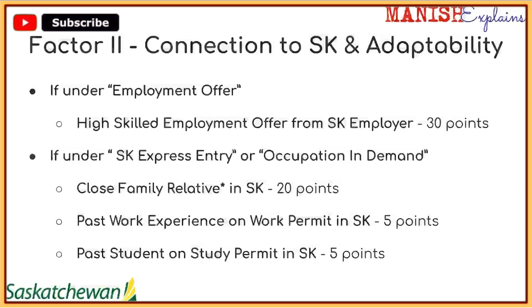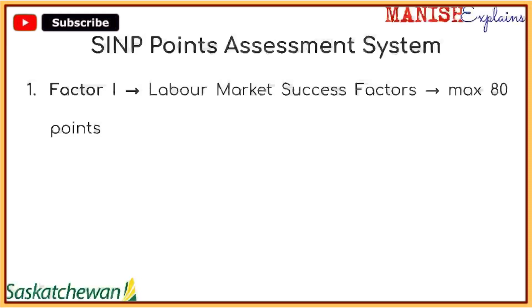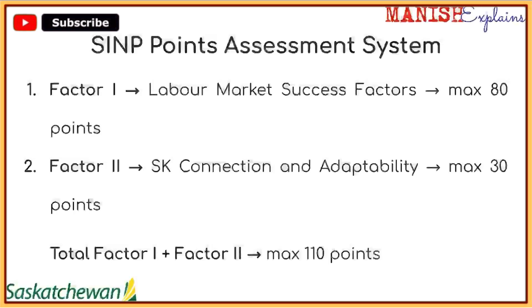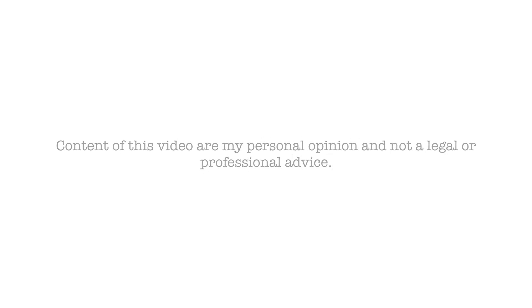As a summary, the SINP point assessment system has two factors: labor market success factors where you can score a maximum of 80 points, and Saskatchewan connection and adaptability where you can score a maximum of 30 points, for a total of 110 points. However, please note that in most streams you only need to score 60 points to apply — so if Factor 1 plus Factor 2 reaches 60 points, you can apply in any of the three streams discussed. I hope you liked this video on the SINP point assessment system and I will see you in the next video. Thank you.